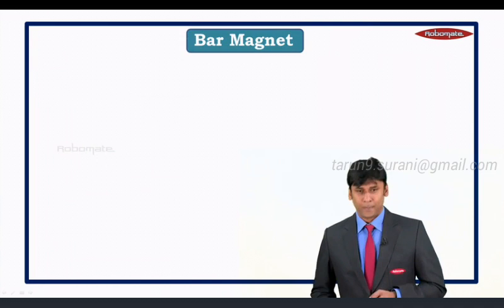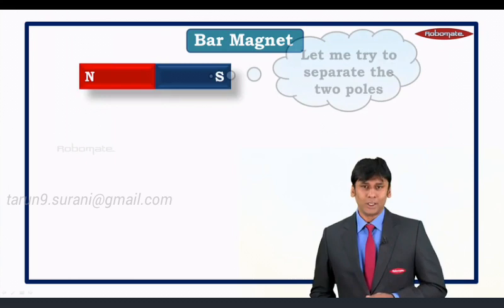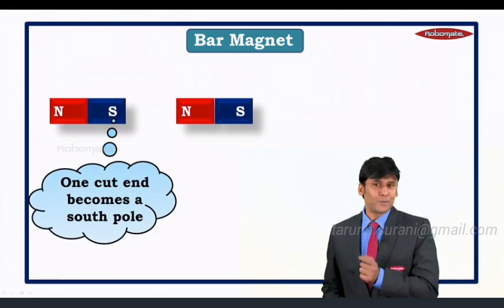A bar magnet contains two poles: the north pole and the south pole. Now, suppose we try to separate the two poles. What happens? As soon as we separate the two poles, one cut end becomes a south pole and the other cut end becomes a north pole — they develop opposite poles again.